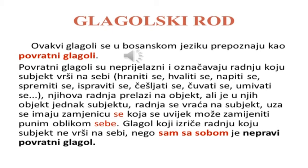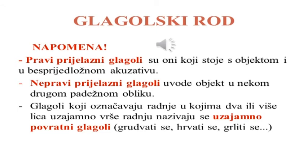Njihova radnja prelazi na objekt, ali je u njih objekt jednak subjektu. Radnja se vraća na subjekt; uz sebe imaju zamjenicu se, koja se uvijek može zamijeniti punim oblikom sebe. Glagol koji izriče radnju koju subjekt ne vrši na sebi, nego sam sa sobom, je nepravi povratni glagol. Pravi prijelazni glagoli su oni koji stoje s objektom u besprijedložnom akuzativu. Nepravi prijelazni glagoli uvode objekt u nekom drugom padežnom obliku. Glagoli koji označavaju radnje u kojima dva ili više lica uzajamno vrše radnju nazivaju se uzajamno povratni glagoli. Na primjer: grudvati se, hrvati se, grliti se.